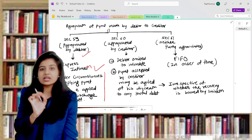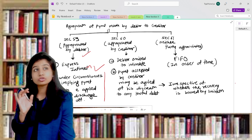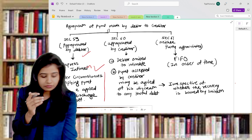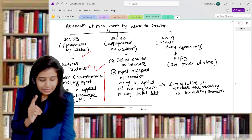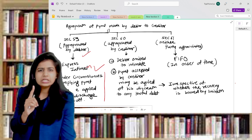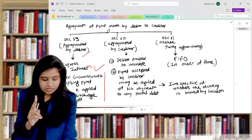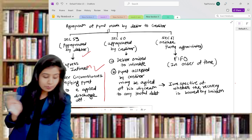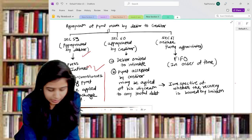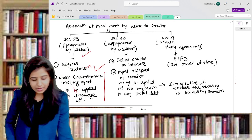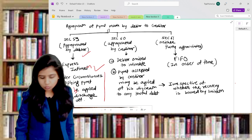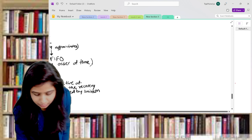First of all, whenever you are writing section 59, there has to be either express intimation or second, under the circumstances implying payment to be applied to discharge the debt. For example, understand.